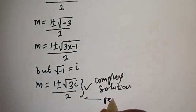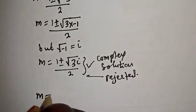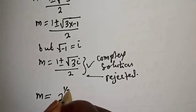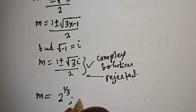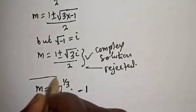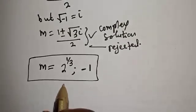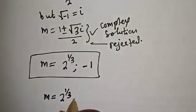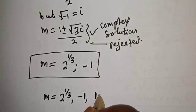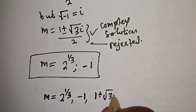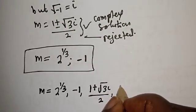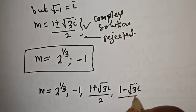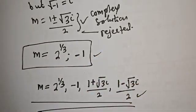And this complex solution is rejected. The only true solutions we have are m is equal to 2 raised to power one-third, and m is equal to minus 1. This is the final answer. In a situation where we are asked to find all the roots, m will also include 1 plus root 3 i over 2, and 1 minus root 3 i over 2. Don't forget to like, share, comment, and subscribe. Thank you.